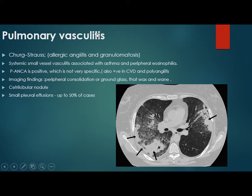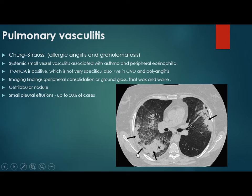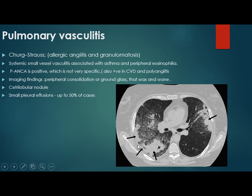Another entity is pulmonary vasculitis. We have Churg-Strauss vasculitis — or allergic angiitis and granulomatosis — a systemic small vessel vasculitis associated with asthma. All cases are associated with asthma and peripheral eosinophilia. P-ANCA is positive, but this is not specific. On imaging, there is peripheral consolidation or ground glass that waxes and wanes, and there are centrilobular nodules. Here we see a patchy area of consolidation peripherally.